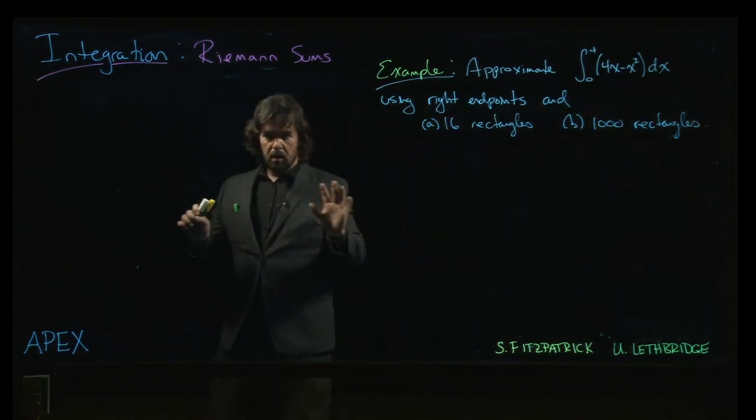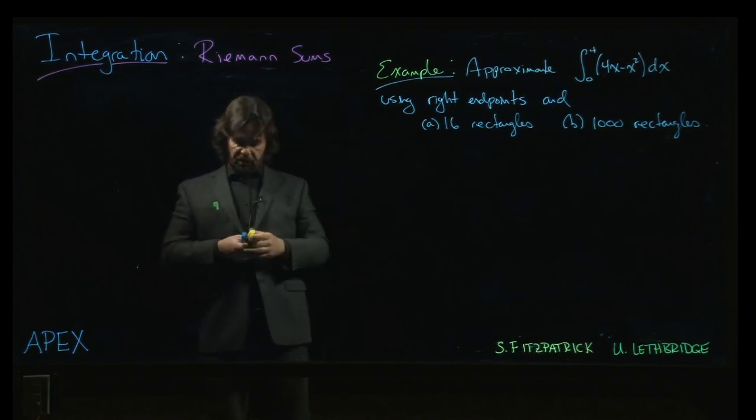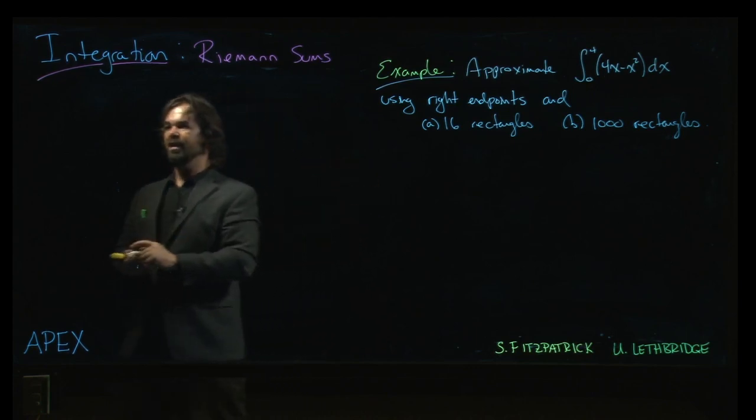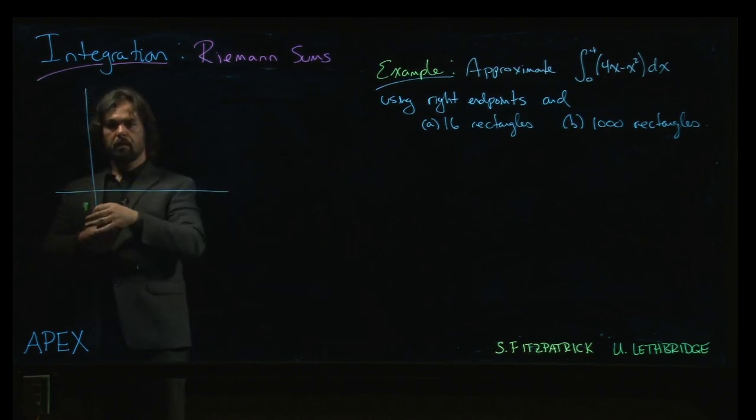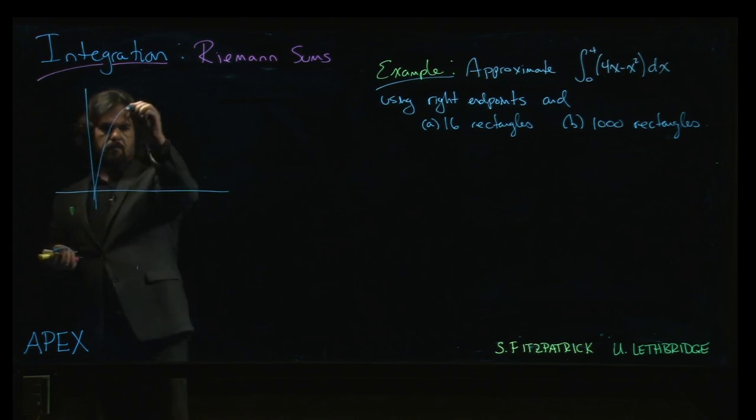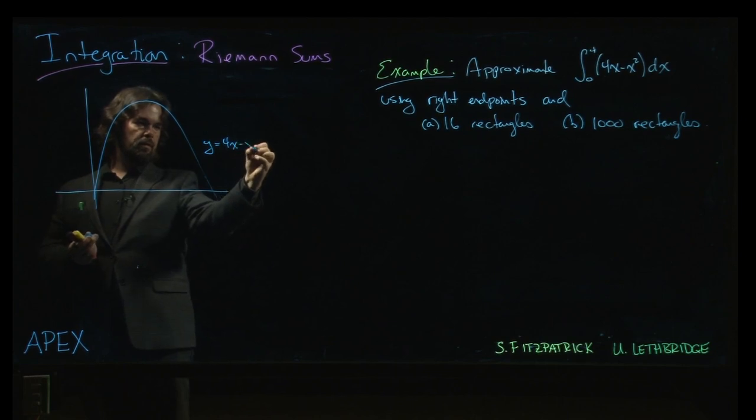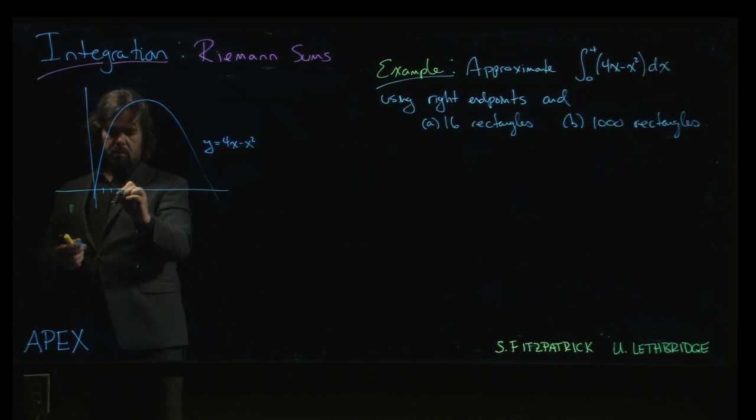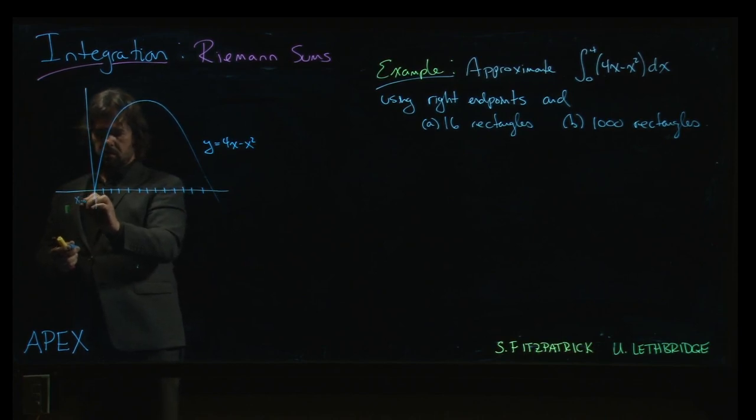So now we want to put some of our work that we've done on properties of summations to use, returning to this example that we began with where we noted four rectangles didn't really cut it. We want to take this graph and approximate the area under the curve using a greater number of rectangles so that we can improve our approximation.